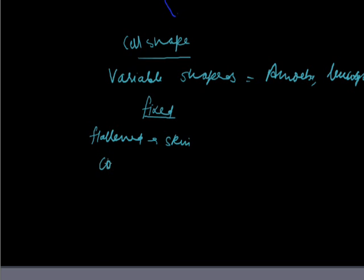like the cells lining the intestine. The cells can be disc shape which can be called as discoidal and the most common example for this shape of cell is RBC that is red blood cell of human beings.